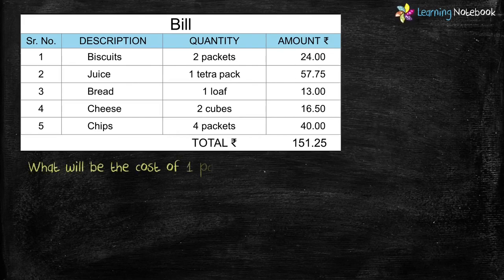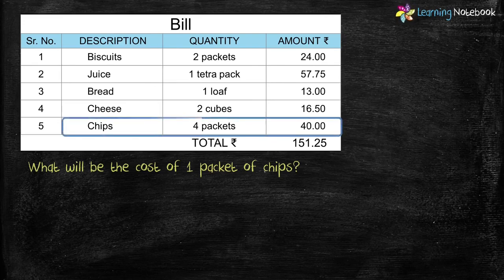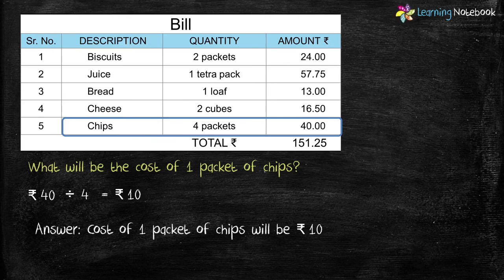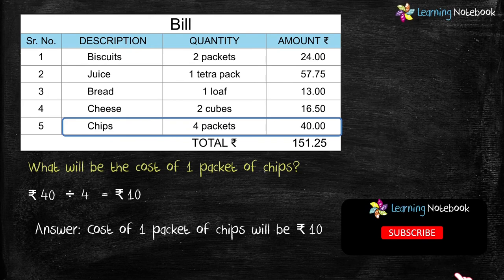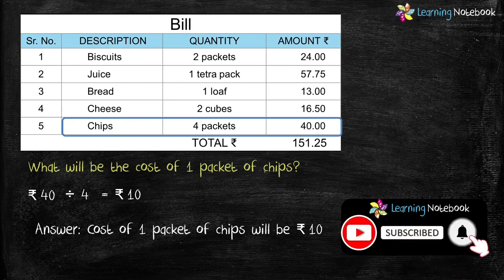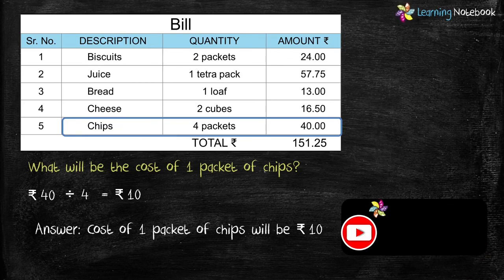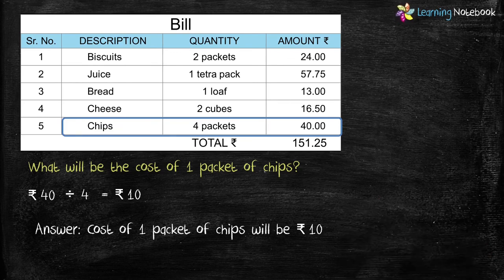What will be the cost of one packet of chips? In the bill, cost of four packets of chips is rupees 40. To find the cost of one packet, we divide rupees 40 by 4, which equals rupees 10. So the cost of one packet of chips is rupees 10. Students, now I'm sure you must have understood how to make a bill from given information and how to solve questions based on bills. Thanks for watching.